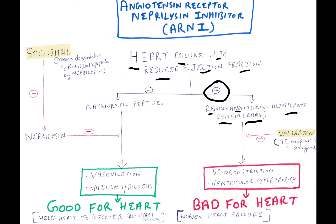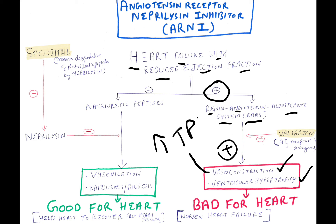RAS causes vasoconstriction and ventricular hypertrophy. Vasoconstriction increases total peripheral resistance, which is bad for the heart as it worsens heart failure.